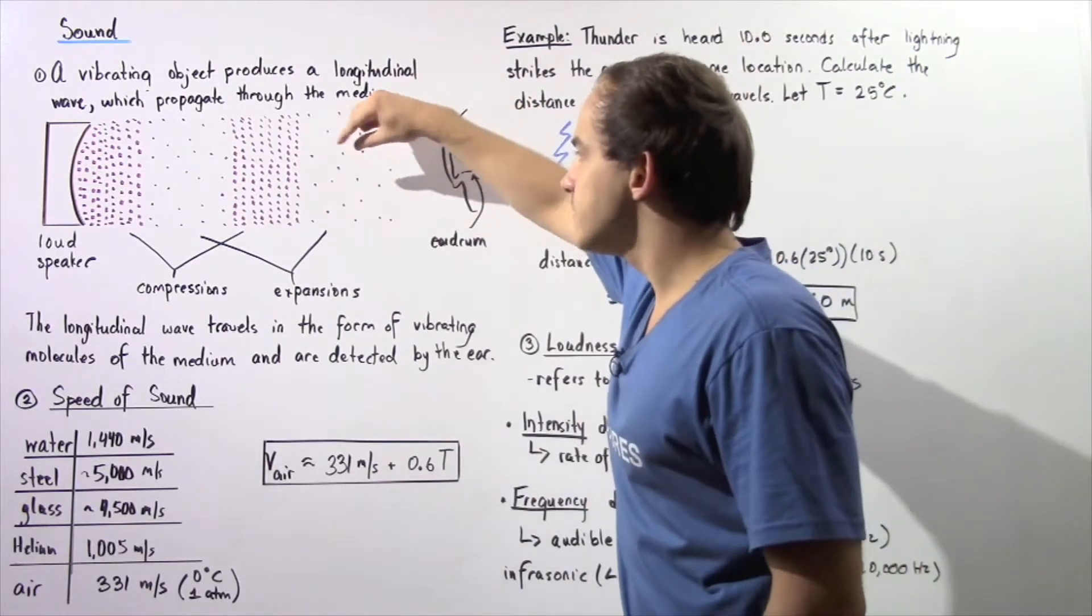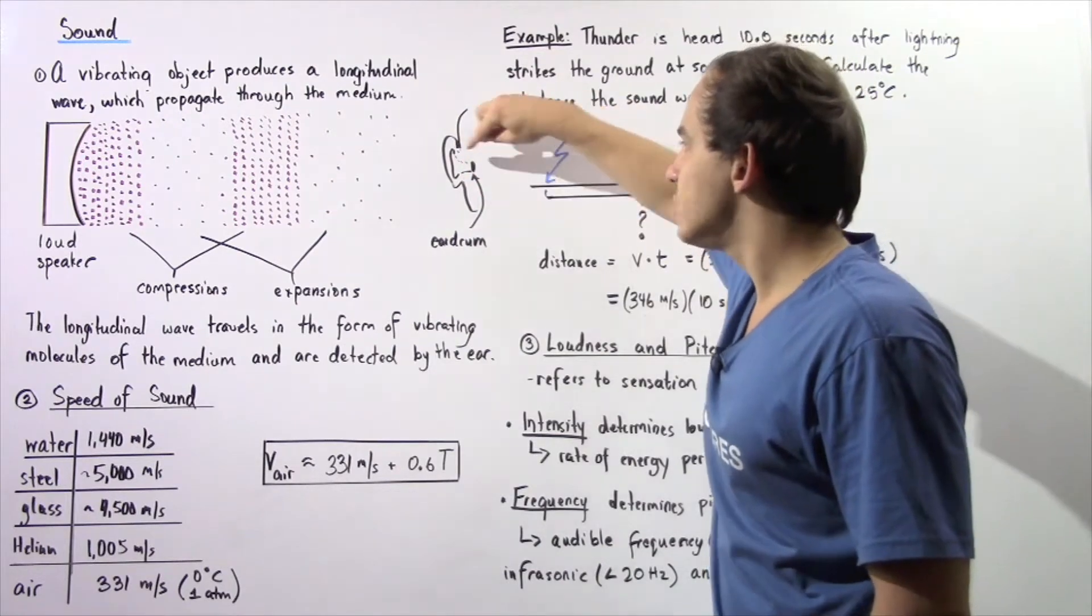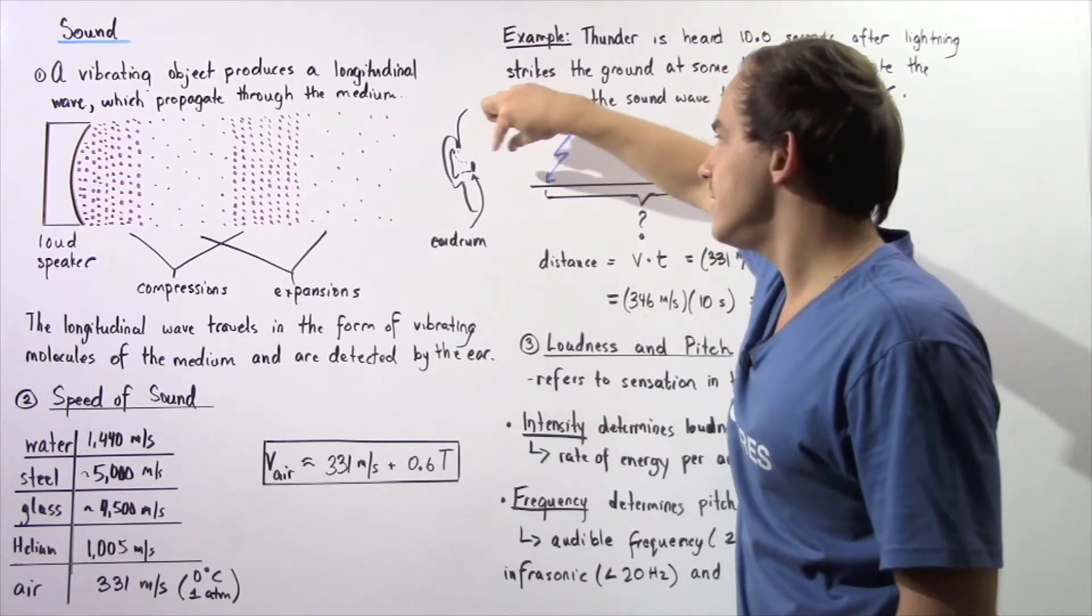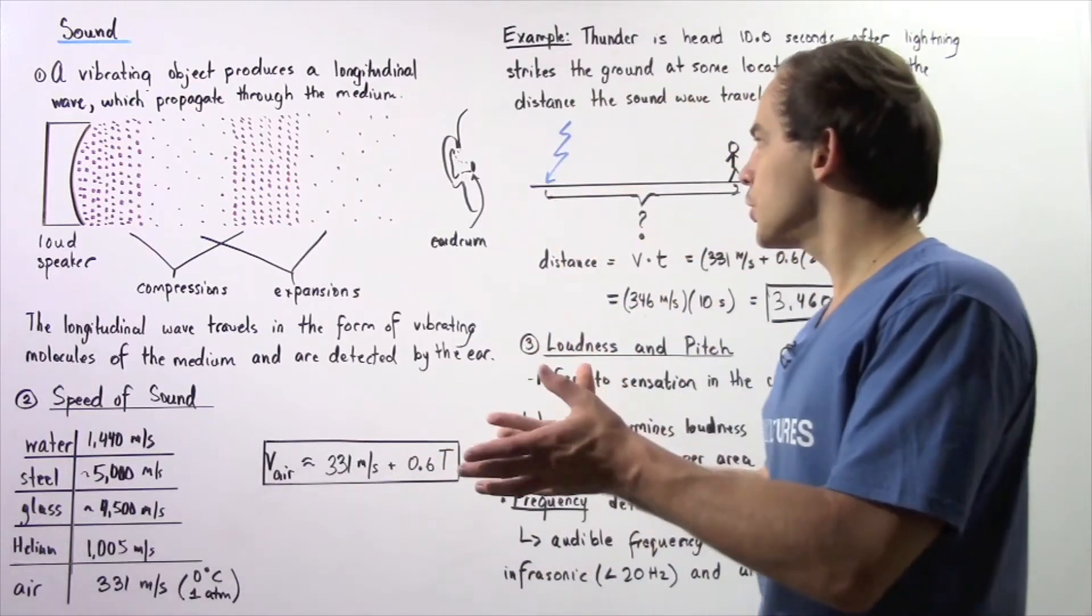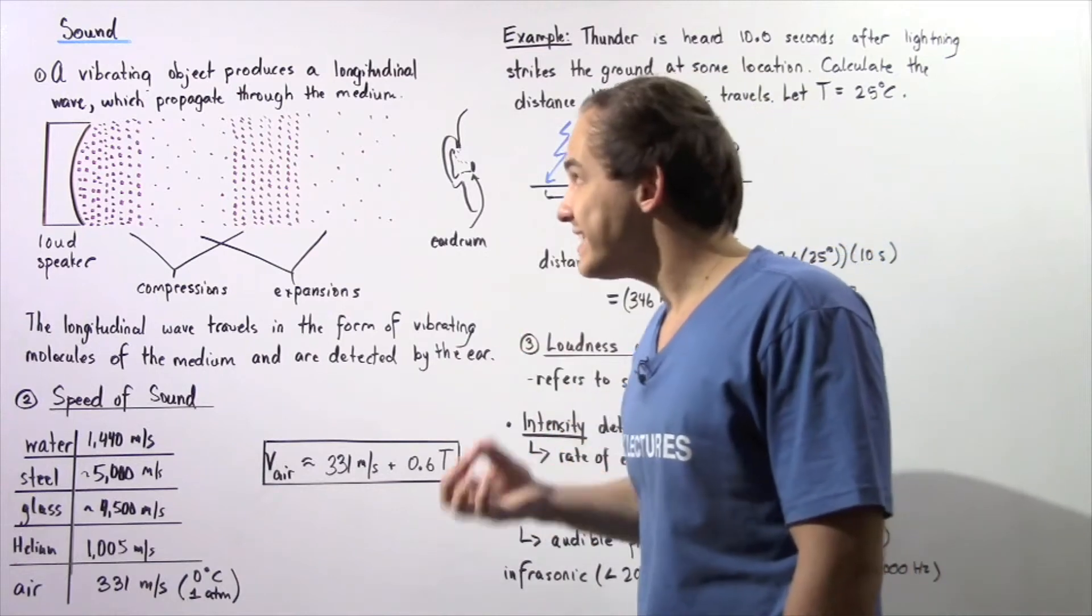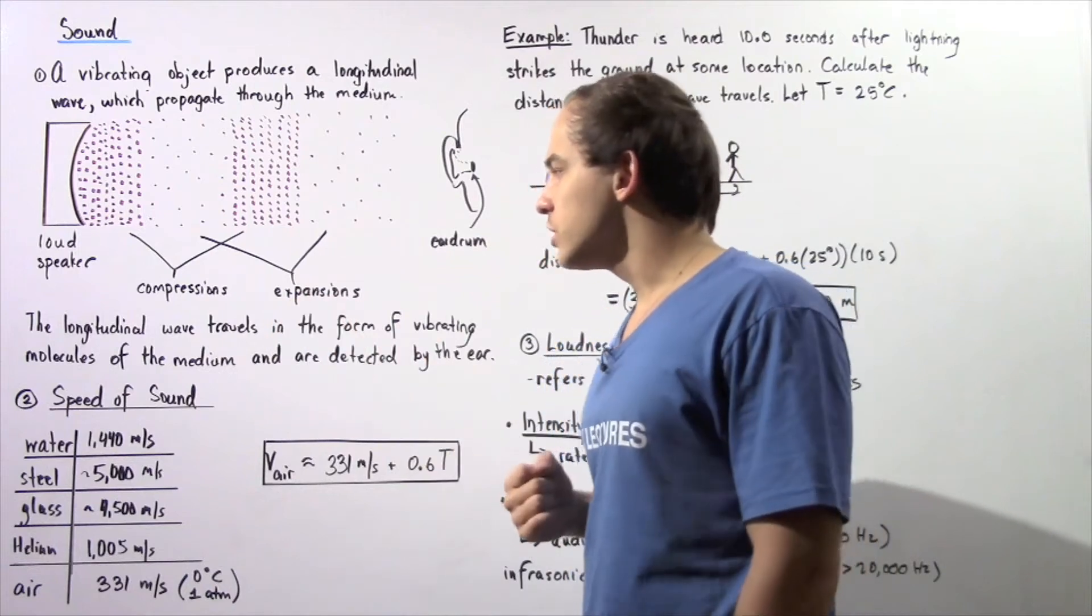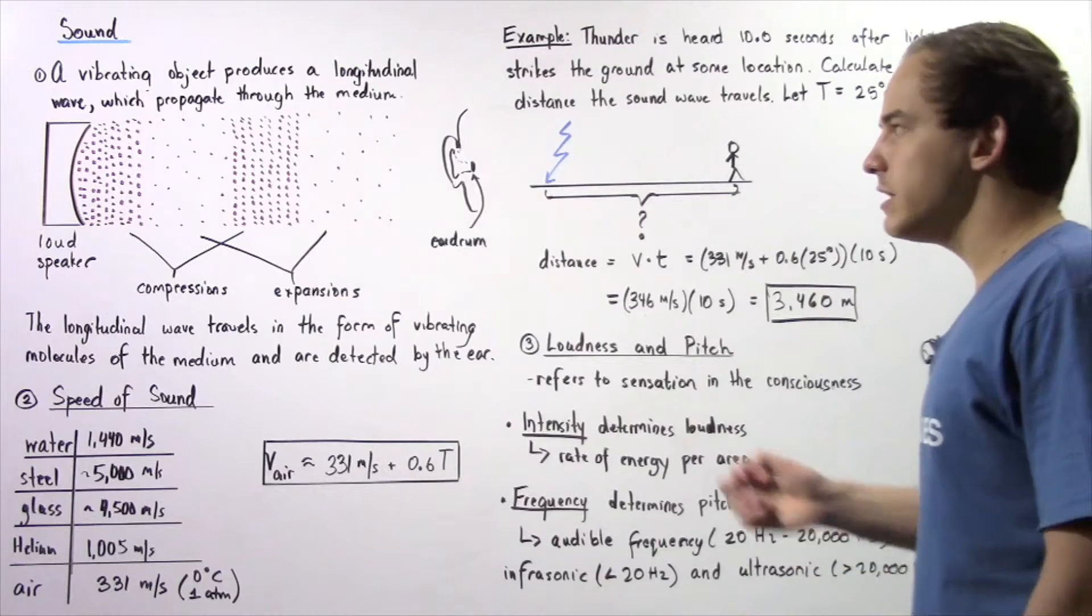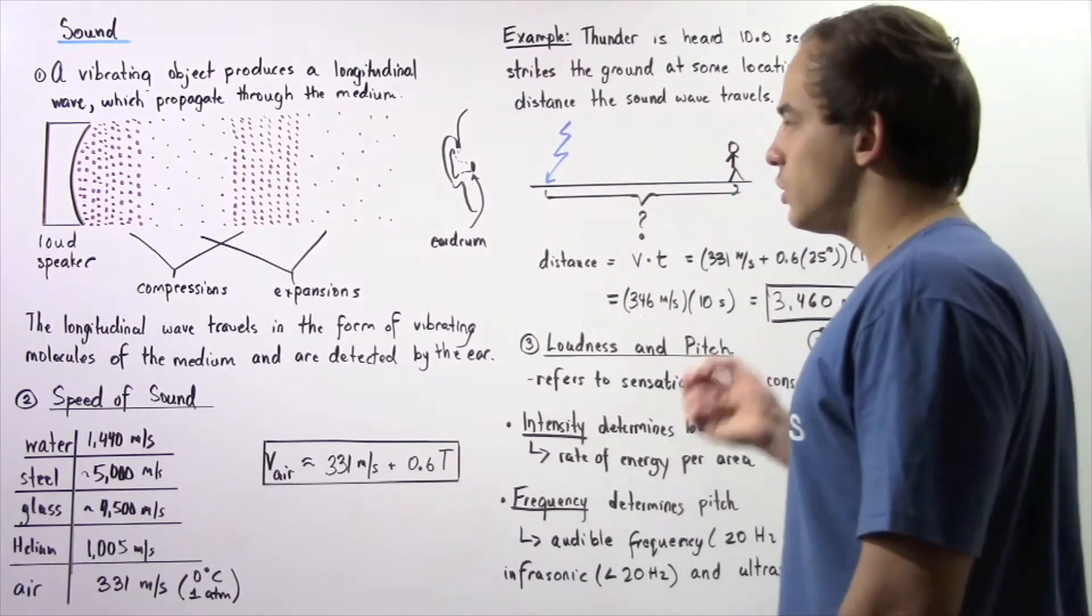Eventually these vibrating molecules will reach the human ear, and when they reach the membrane, the eardrum found in the human ear, that eardrum will begin to vibrate, causing the bones to vibrate. That in turn will send a signal to the brain, and the brain will perceive the sound wave as sound. The longitudinal wave travels in the form of vibrating molecules of the medium, in this case the air, and these are detected by the human ear.